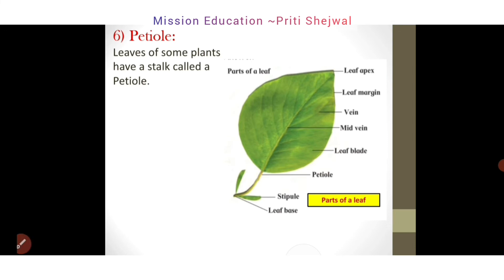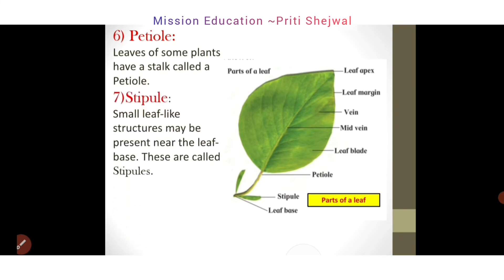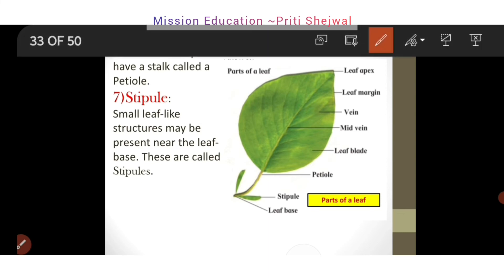The seventh one is stipules. What are stipules? A small leaf-like structure that may be present near the leaf base — these are called stipules. In the picture, the stipule is located here. This small leaf-like structure, this part, is called stipules. So stipules means a small leaf-like structure that may be present near the leaf base.